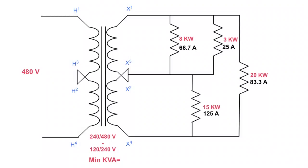Now we've determined all the current going through each branch, we can determine what our line currents are going to be. Line one: all I have to do is take 66.7 plus 25 plus 83.3, which gives us 175 amps on this line. Then going to line two, we take 83.3 amps and add it to 125 amps and we get 208.3 amps.